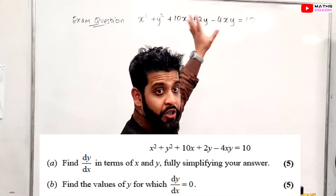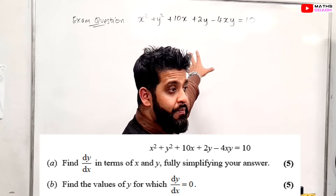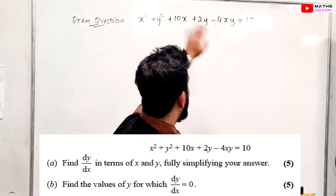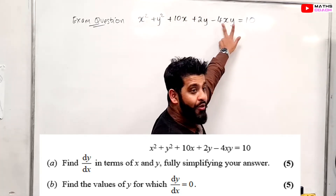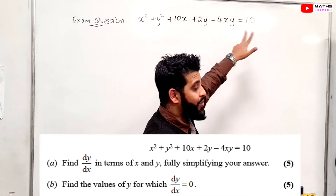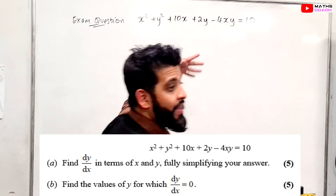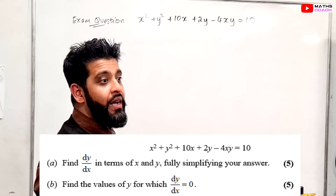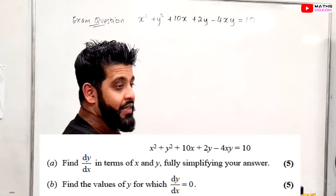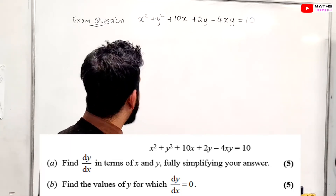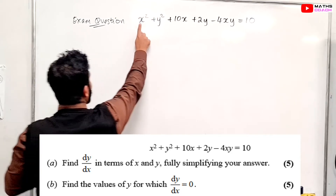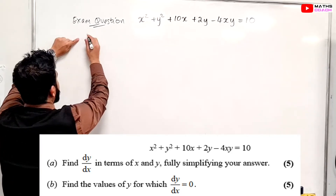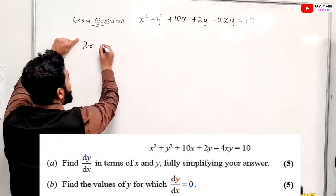Let's do the first part, which is to find dy/dx. We're going to differentiate implicitly. Where we see a y, and where we see a product, we use the product rule. Then we're going to make dy/dx the subject by factorizing and isolating it.